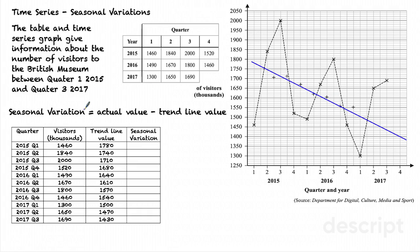The seasonal variation is the actual value — the original data value — minus the trend line value. So I've set up a new table here. I have each of the quarters and I have transcribed the values from the original table. I've then read values from the trend line. So at 2015 Q1, I read the value here, which is 1780.